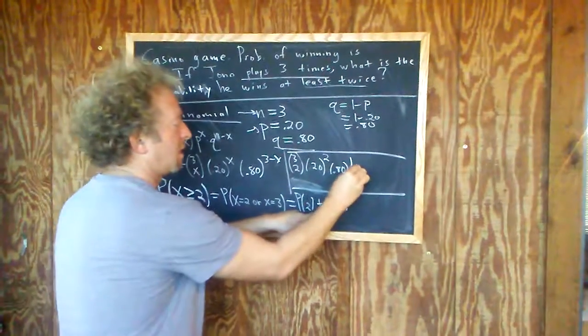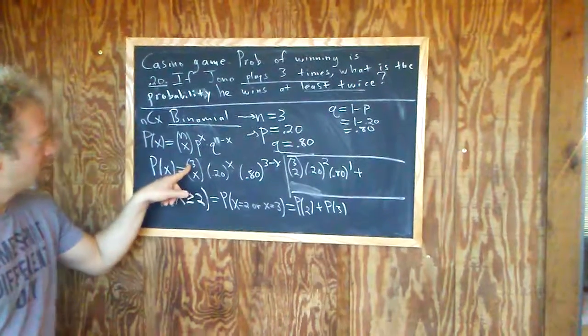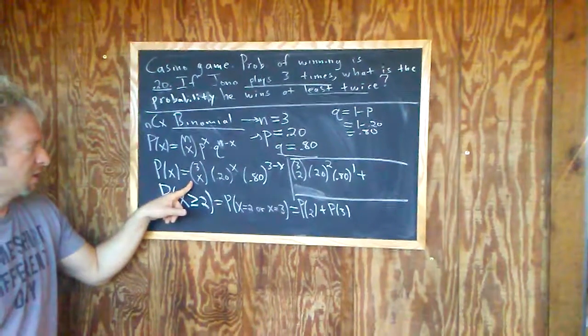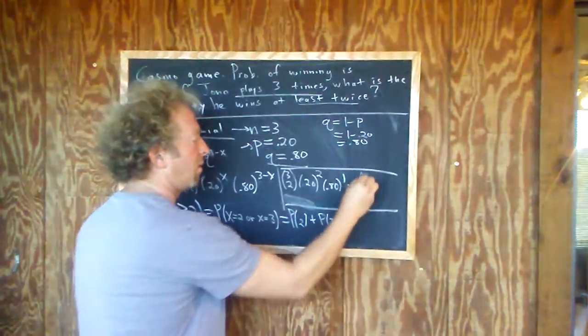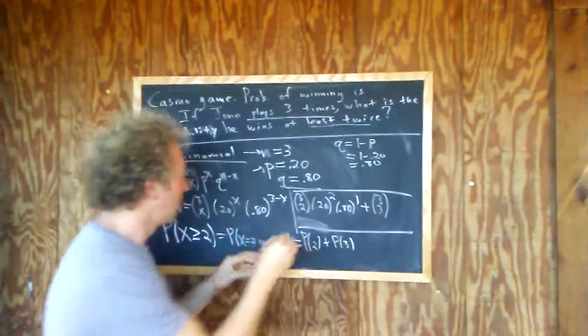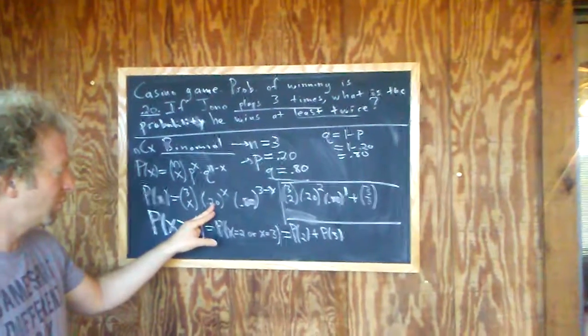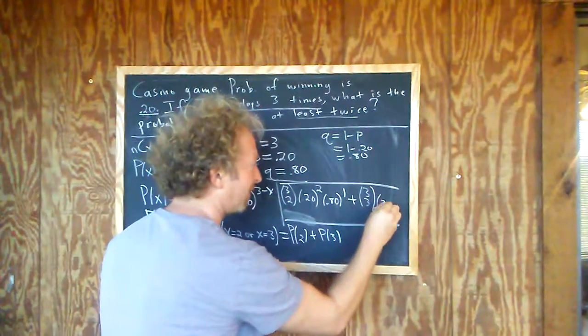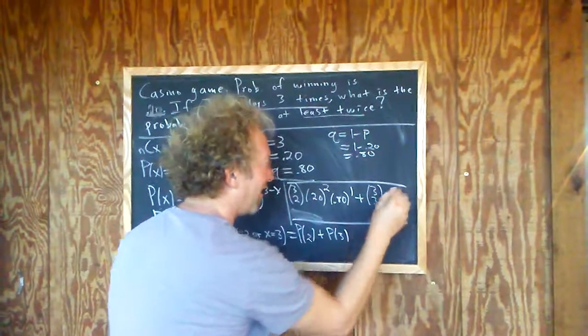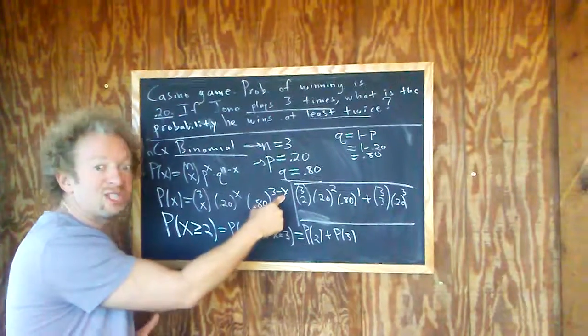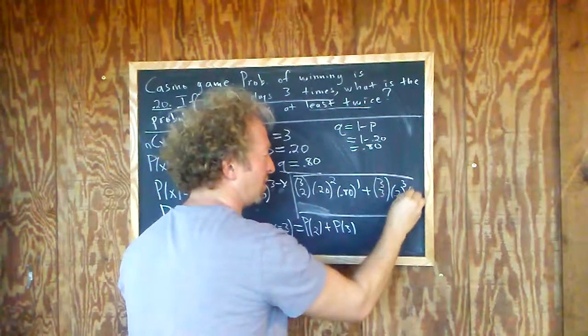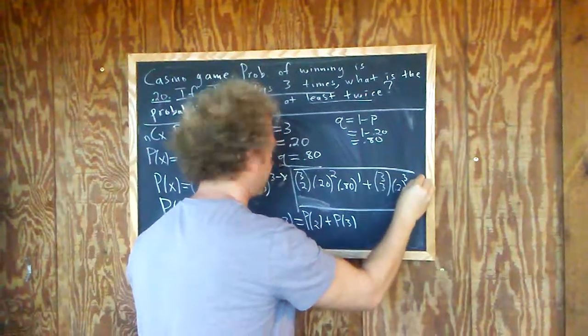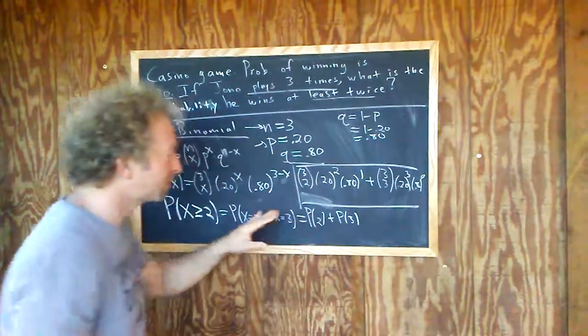OK. And then plus. OK. And then three choose three. Right. So three choose three. Got to write small. Baby board. 0.2 to the three. Because X is three. Right. I don't want to mess up. And then 0.8. And then oh. Three minus three is zero. So 0.8 to the zero. 0.8 to the zero. 0.8 to the zero. 0.8. All right.